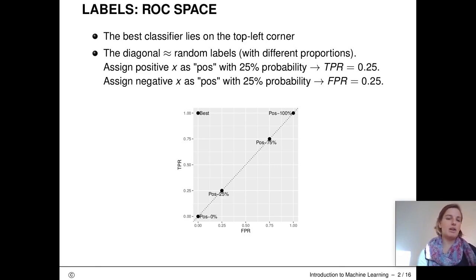For example, a random classifier predicts positive class with a probability of 25%. Then we'd get, on average, a TPR of 0.25 and an FPR of 0.25. If the classifier would predict positive class with a probability of 75%, again, without any useful assignment, but randomly, then both TPR and FPR are 0.75.